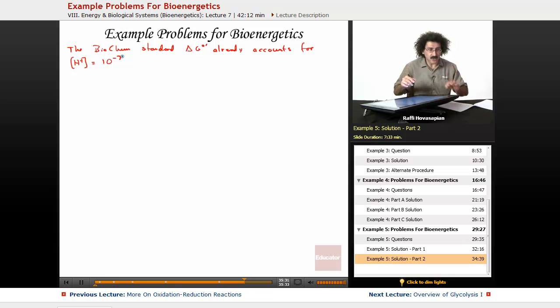What we have to do is recover not the biochem standard, but the normal chemical standard that doesn't account for this, where we say one molar concentration of every species. Well, that one molar concentration also includes the hydrogen ion.